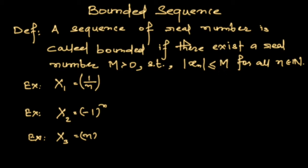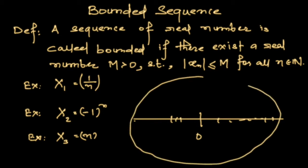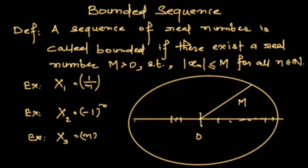If you have a sequence, we say that the sequence is bounded if you can make a circle of radius M such that all the terms x1, x2, x3, x4, x5, and so on, all lie inside this circle.